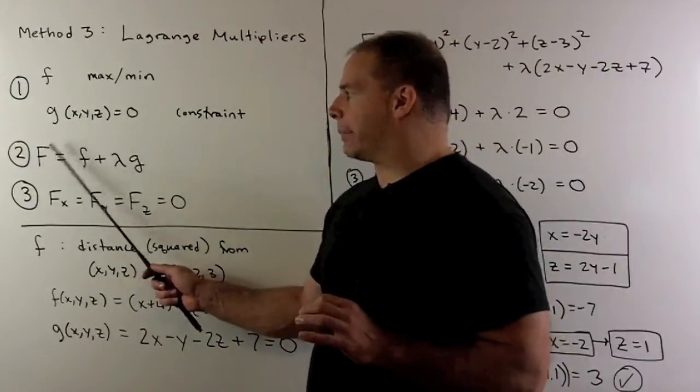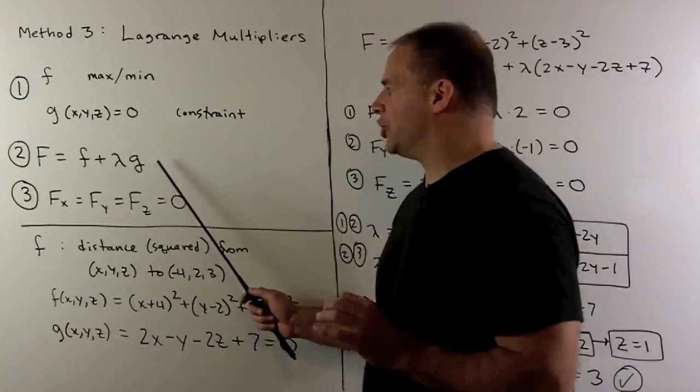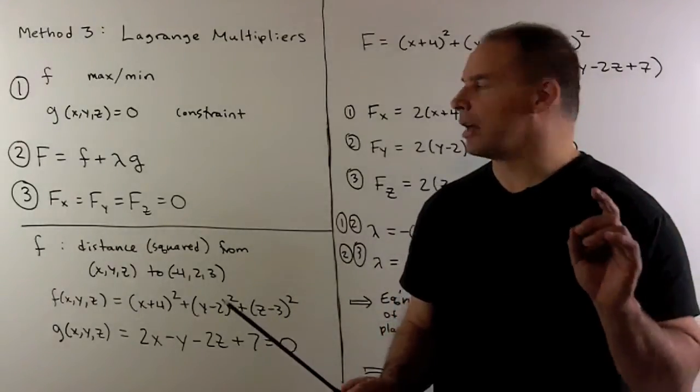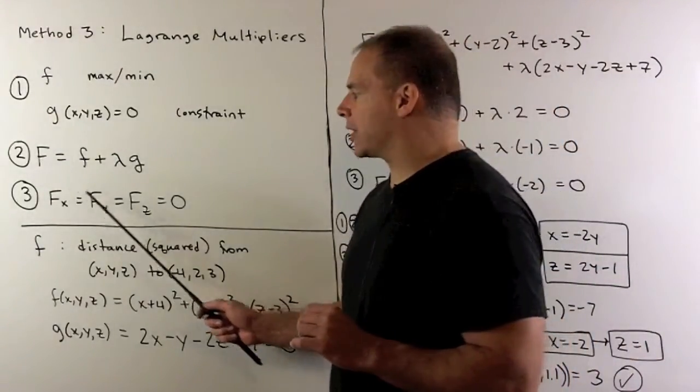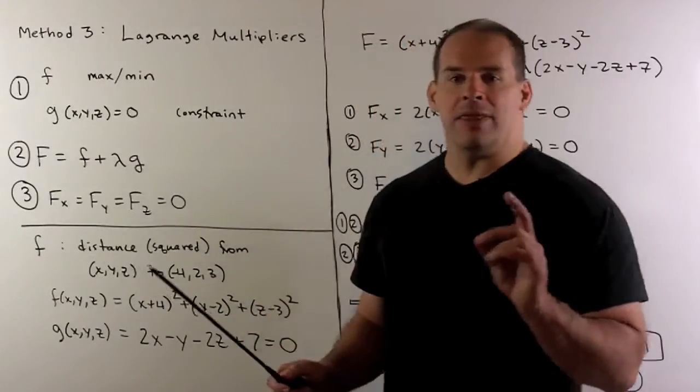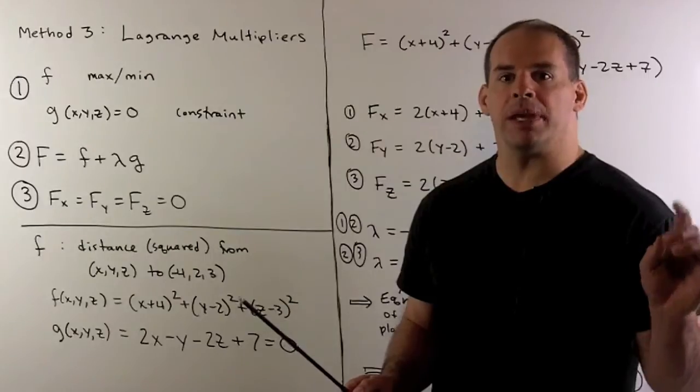Then, we define capital F as f plus lambda times g. We proceed by taking the partial derivatives of capital F with respect to x, y, and z, treating lambda as a constant. Then, we set those partials equal to zero and solve.